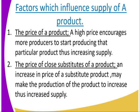Number two is the price of a gross substitute of the product. An increase in the price of a substitute product may make the production of the product increase, thus increasing surplus. When the substitute's price has increased, demand is going to increase on the other side. As a result, the producer increases what he is supplying to the consumer, since demand is up.